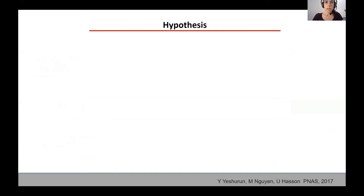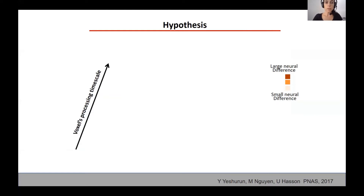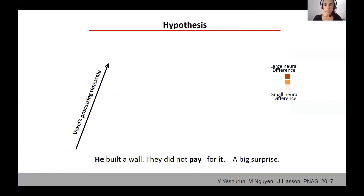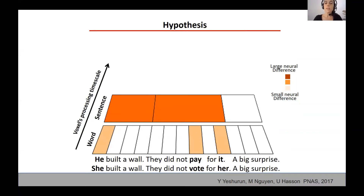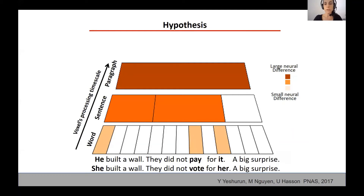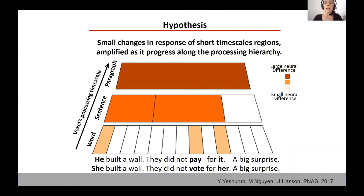The crossing timescale hierarchy leads to the prediction that the longer the crossing timescale of a region, the bigger the difference between its responses. Going back to our example, there is a relatively small difference in voxels that integrate over phonemes or words, as only three out of the 13 words were changed. There is a relatively larger difference in voxels integrating information over a couple of words or a sentence, as two out of the three sentences were different. And there will be even larger difference in voxels integrating information over a few sentences or paragraphs, as the whole paragraph is different. So our hypothesis was that small changes in response of short timescale regions will be amplified as we progress along the cortical hierarchy.